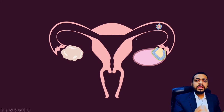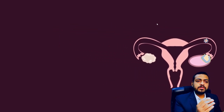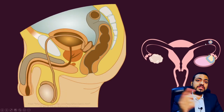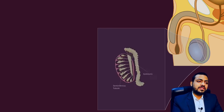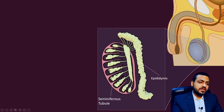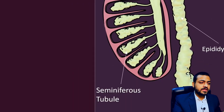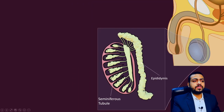This was about how the secondary oocyte is transported. Now, what about the male gamete? How is sperm transported from the testes up to the ampulla of the uterine tube? These sperms are formed and synthesized in the testes — specifically in the seminiferous tubules of the testes.